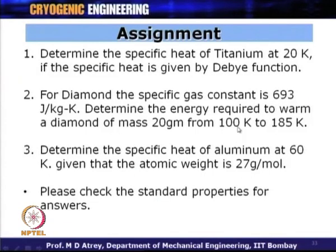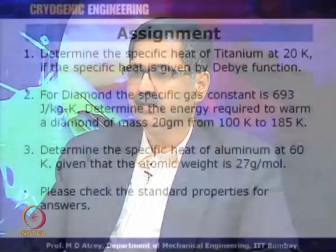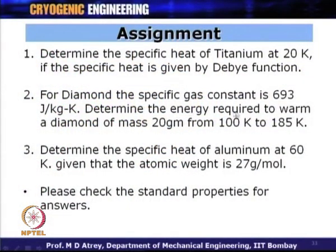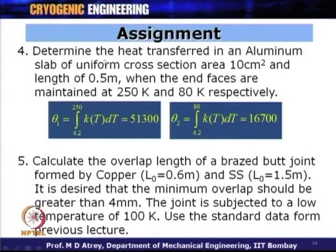Based on the tutorials, assignments are given covering: calculation of specific heat and specific gas constant, determining energy required to warm a material, calculating Q, specific heat of aluminum at 60 Kelvin, heat transfer calculations, and calculation of shrinkages to maintain overlap length. Please solve these assignments using standard data available in the literature and from earlier lectures.